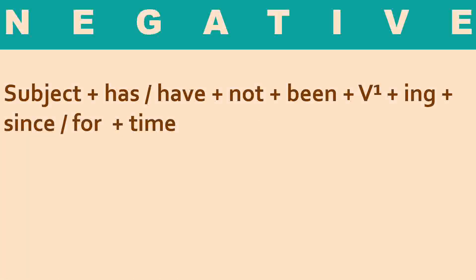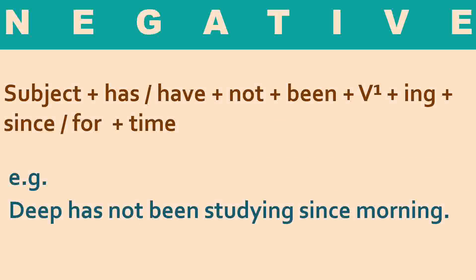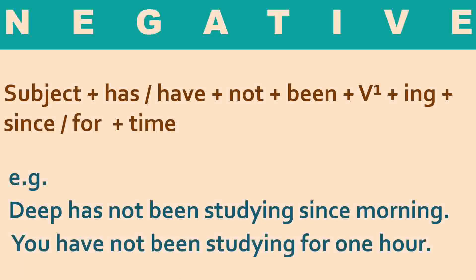For the negative sentence, the structure is the same but you use not just after the helping verb — has not been or have not been. In the middle of the helping verb, you insert not. See the example: 'Deep has not been studying since morning.' Another example: 'You have not been studying for one hour.' So you use has not been or have not been, then first form of the verb with ing, then since or for with the time.